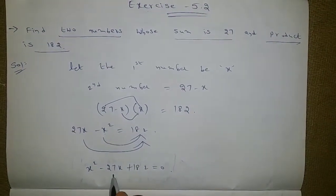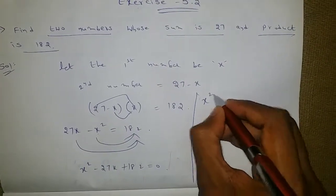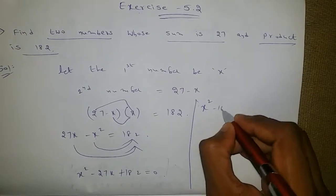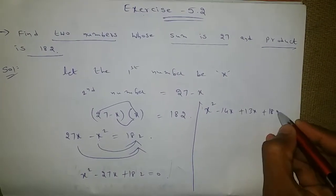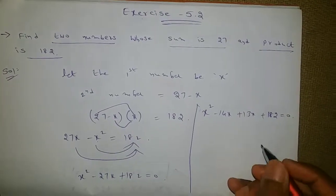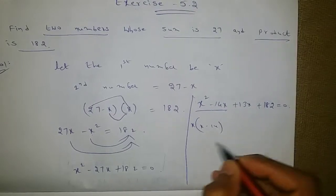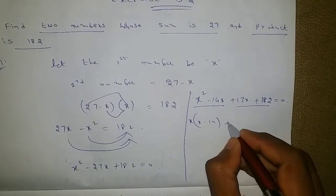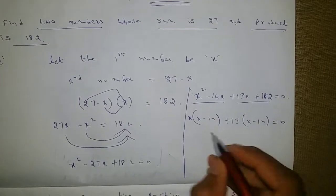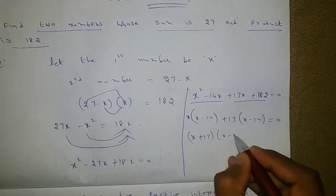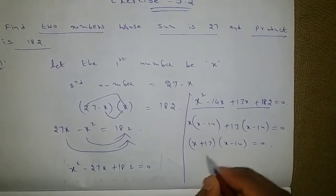Now we need to split the middle term into two terms. x squared minus 27x plus 182 can be written as x squared minus 14x minus 13x plus 182 equals 0. Taking x common from the first two terms gives x minus 14, and taking 13 common from the next two gives x minus 14. So we get x plus 13 into x minus 14 equals 0.